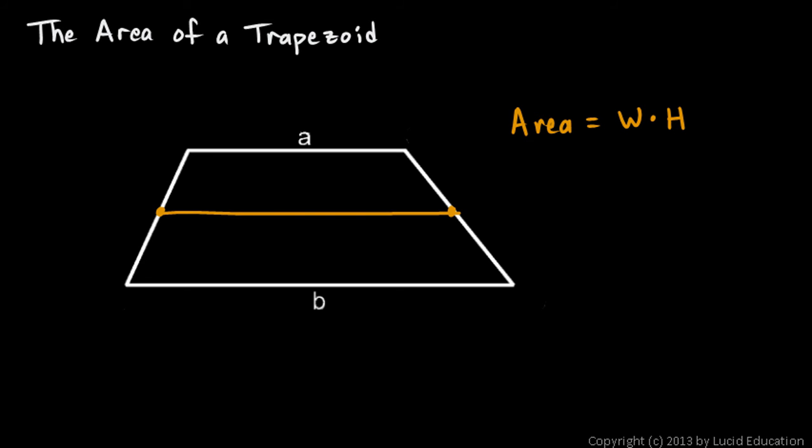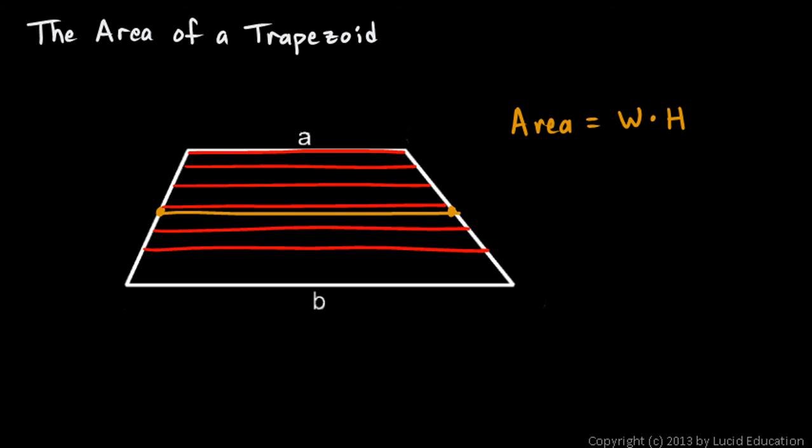You could think of it like this. Here's width A and then imagine moving down. As you go down, the trapezoid gets wider and wider. It gradually gets wider until you get all the way to the bottom.